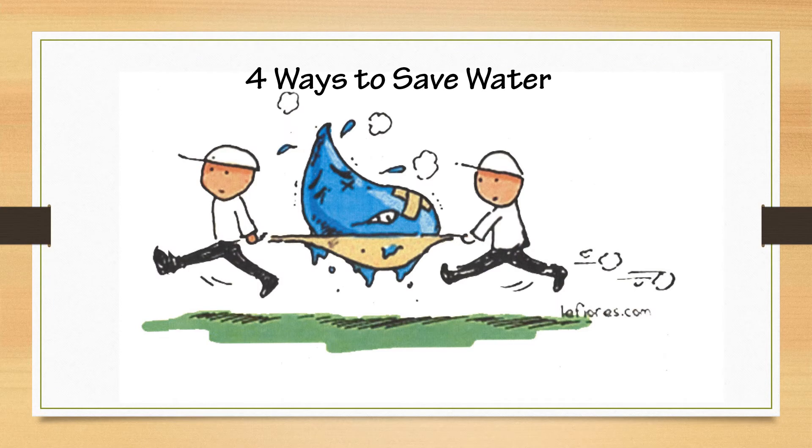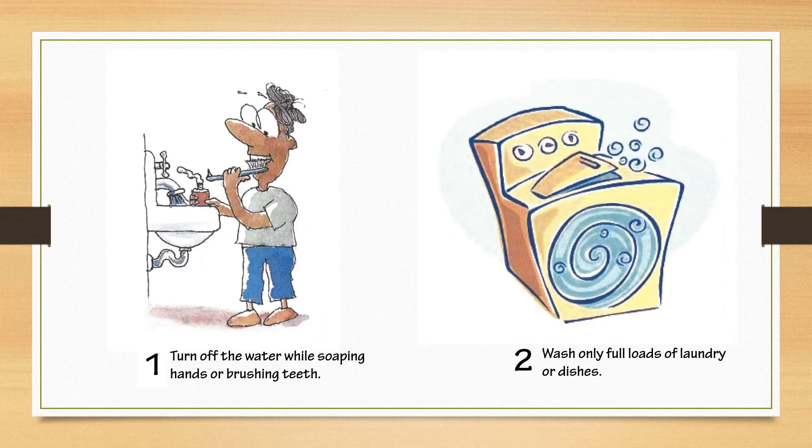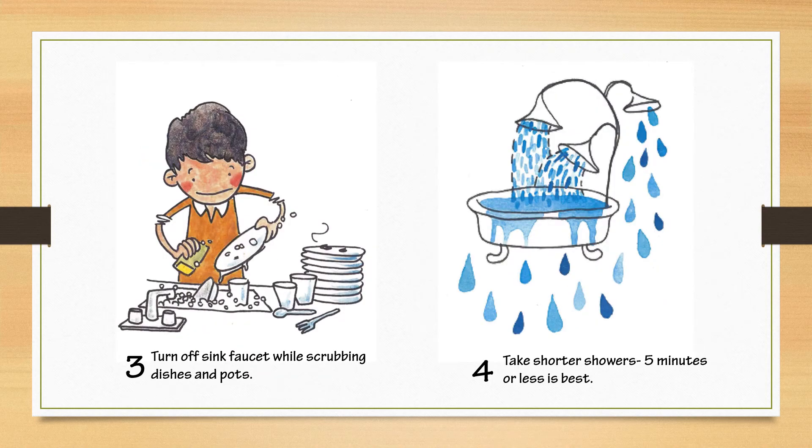Here are four ways to save water. Number one, turn off the water while soaking hands or brushing your teeth. Number two, wash only full loads of laundry or dishes. Number three, turn off the sink faucet while scrubbing dishes and pots. Number four, take shorter showers. Five minutes or less is best.